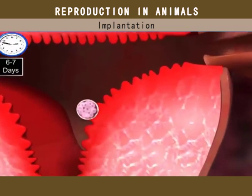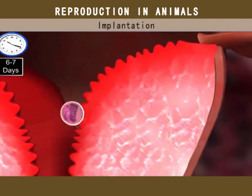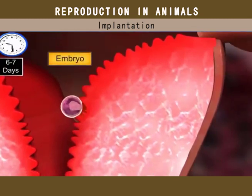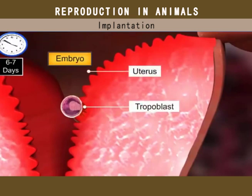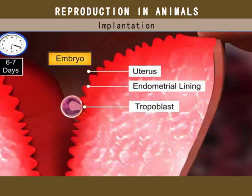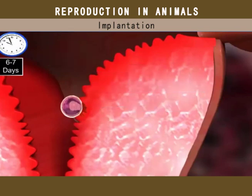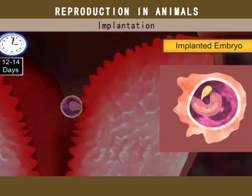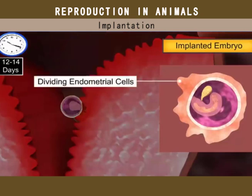At this stage, the zygote, now called the embryo, gets attached to the uterus as the trophoblast grows outwards and penetrates the endometrial lining of the uterus. In response, the endometrium cells divide and start surrounding the blastocyst, causing it to sink and get implanted into the uterus.